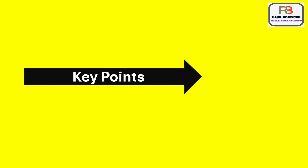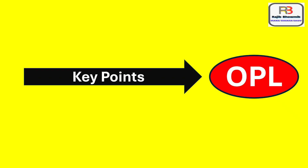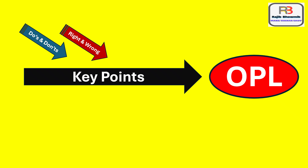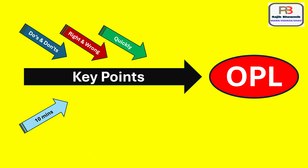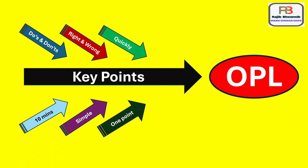Let us understand the key points to remember while preparing OPL. Show do's and don'ts and right and wrong photos. Use photos, text and arrows. Suppose the information needs to be accessed quickly, ensure the subject can be explained in a maximum of 10 minutes. It must be written as simply as possible. Only one point is illustrated on a single sheet of paper.